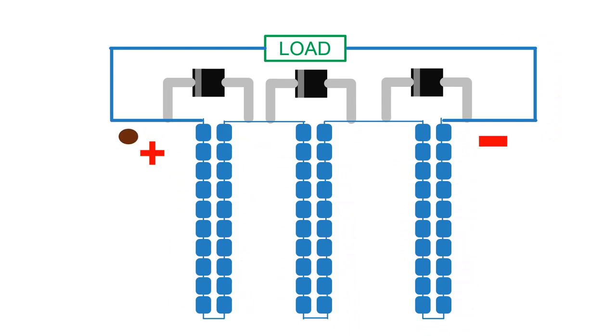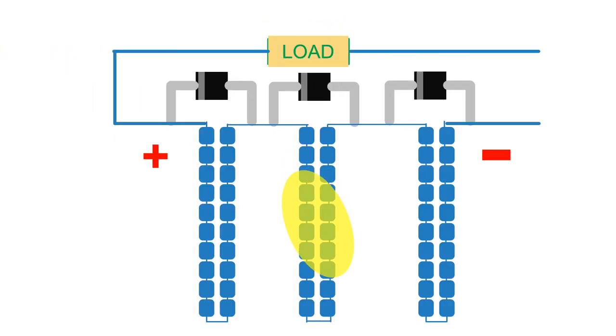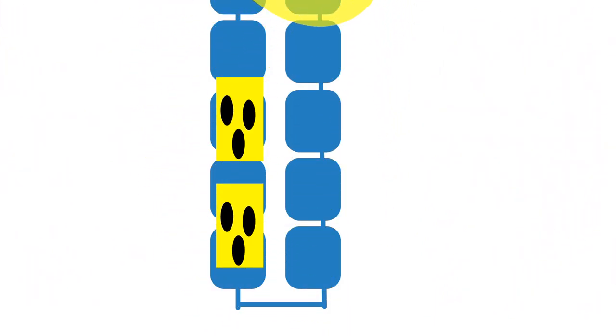Now I'll tell you what happens when shading occurs. Imagine that part of the cells of the panel experience partial shading. Then these cells oppose the flow of current generated by the other cells, which leads to the panel heating up and power loss, and can also create local hotspots.